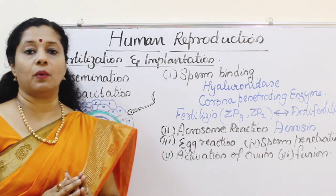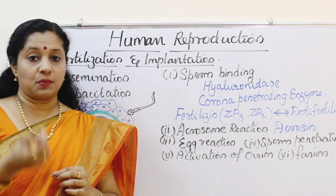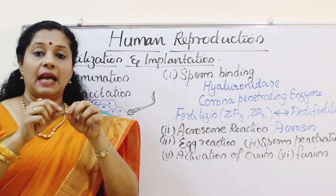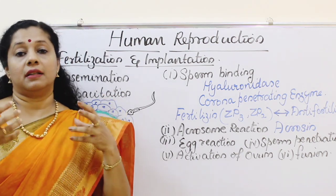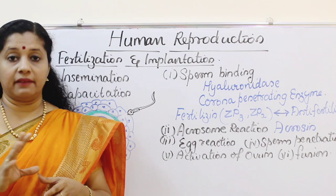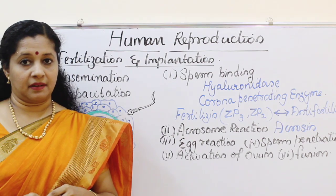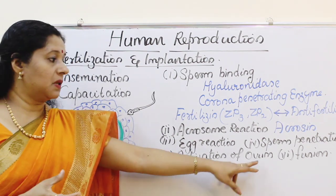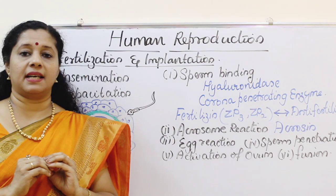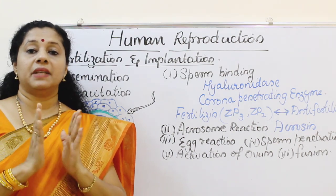Followed by that is activation of the ovum. The secondary oocyte was arrested at metaphase II stage. Now it will switch into anaphase II because the sperm neck had a proximal centriole, which helps in forming the spindle fibers for this to happen. Through anaphase and telophase, an unequal division results, forming the ootid — the female gamete — and a second polar body. The ootid and the sperm then come together; the nuclear membranes of both dissolve and the nuclei fuse, forming a synkarion, and the cell is again diploid.